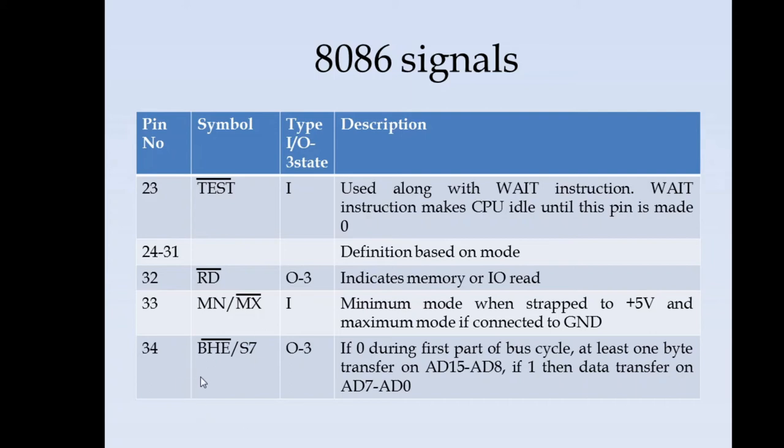The next pin is pin number 34 which is bus high enable or S7. This is an output signal. If it is zero during the first part of bus cycle, then at least one byte transfer on AD15 to AD8. The data lines, it is a 16 bit processor, we have D0 to D15. D0 to D7 represents the lower byte and D8 to D15 represents the higher byte. Whenever there is any operation on the higher byte, then this bus high enable will be active, meaning it will be zero, indicating the transfer on the higher order bus.